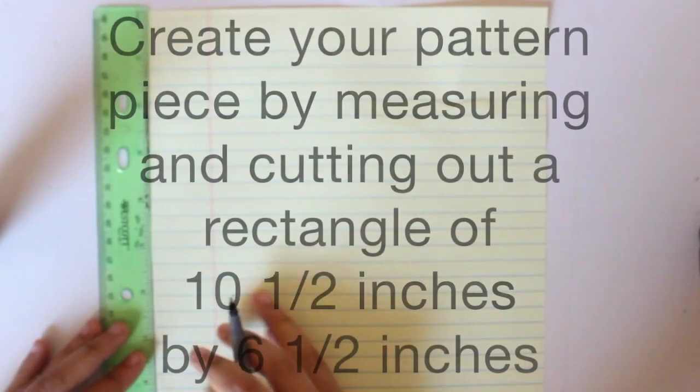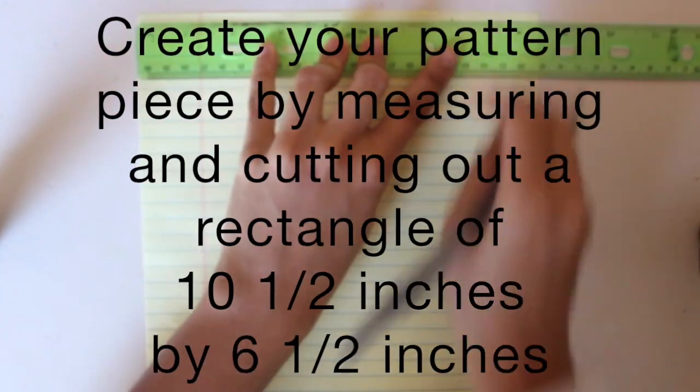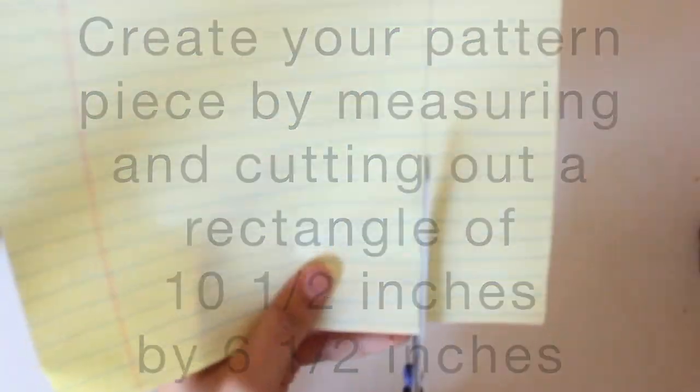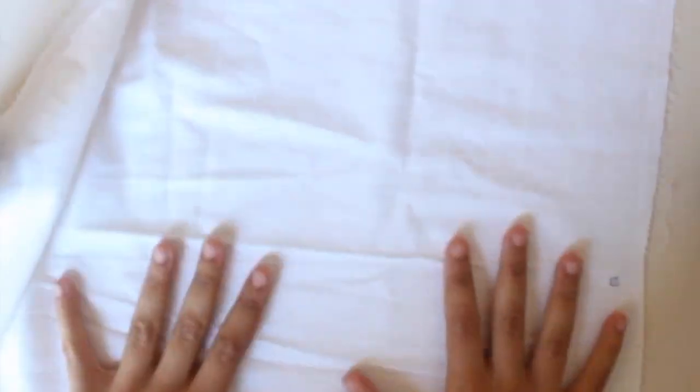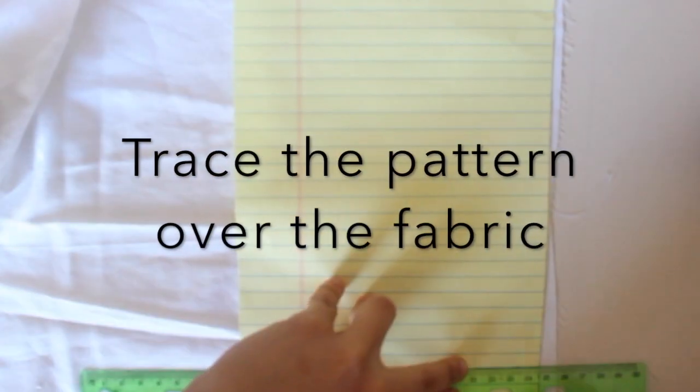You're going to start out by creating your pattern piece by measuring and cutting out a rectangle of ten and a half inches by six and a half inches. Trace your pattern over the fabric and cut around.